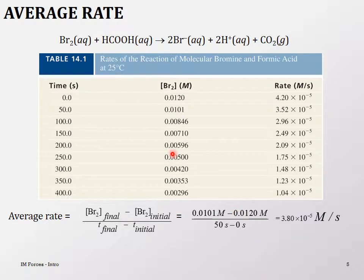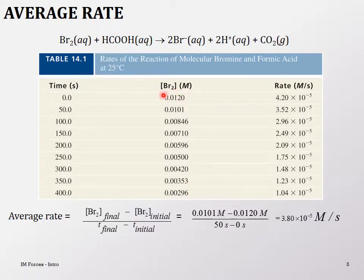We also have something called the average rate of reaction. The average rate of reaction is when you have a reaction that you started at time zero and then track it until it finishes. Here, in seconds, the concentration of bromine is disappearing. The concentration starts at 0.012, and by the end it is 0.00296 — a very small concentration, so the solution will be almost colorless at this point.